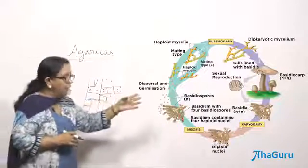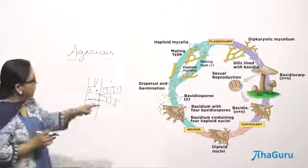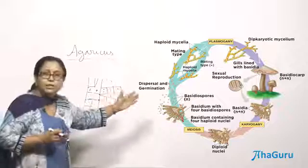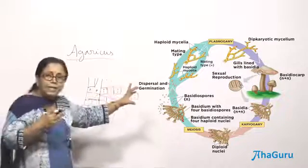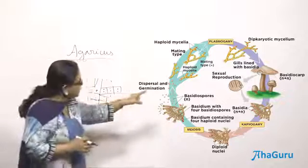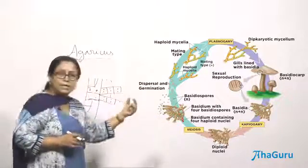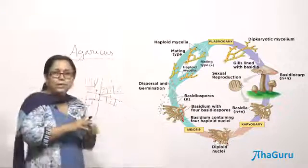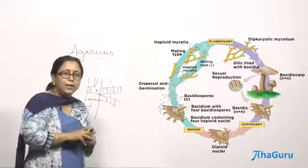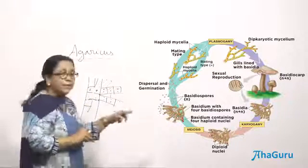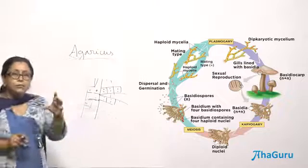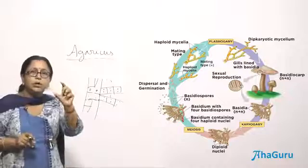The dikaryotic or secondary mycelium starts producing the fruiting body. A button-like structure grows into an umbrella-like structure known as the Basidiocarp — that is what we call a mushroom. In Agaricus you can see it has a cap and a stem called the stipe. Under the cap there are line structures known as gills. That is the reason why this fungi is called gill fungi.